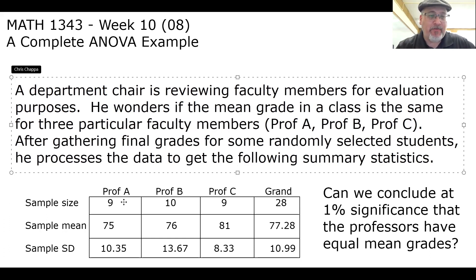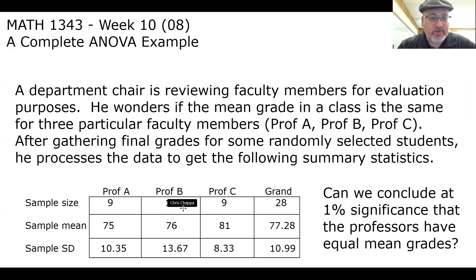For Professor A, take a sample of nine students whose mean grade was 75, with a standard deviation of 10.35. For Professor B, there was a sample of 10 students with a mean grade of 76, and a standard deviation of 13.67. And for Professor C, there were nine students with a sample mean of 81 for a grade with a standard deviation of 8.33. The grand values, if we look at all the students as one big sample: the grand sample size is 28, grand sample mean is 77.28, and the grand sample standard deviation is 10.99.